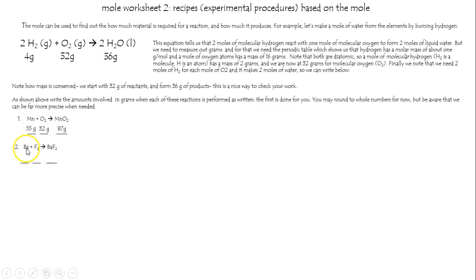If I want to make some barium fluoride, I'm thinking I'm going to mix 137 grams of barium and 38 grams of fluorine. I hope you didn't write 19, because it's F2. And add them up, you get 175 grams of barium fluoride. That's your theoretical yield.